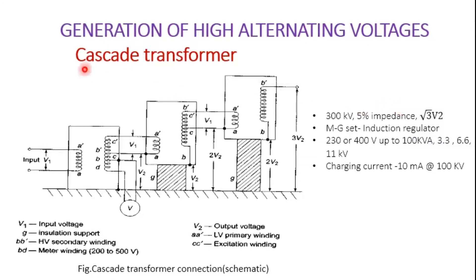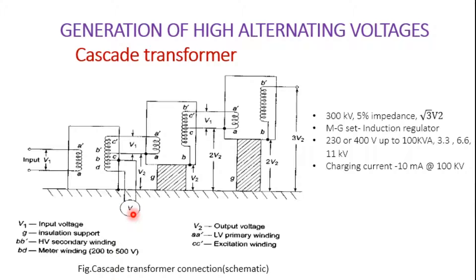Now we are going to discuss the first one, that is the cascade transformer. Here we see the circuit diagram of the cascade transformer. The input is generally fed by a motor generator set or sometimes an induction regulator. This is the input voltage V1, having the primary winding AA dash, then a secondary winding B dash, and another winding BD for measurement of the voltage across the secondary side. V1 is input, G is the insulation support, B dash is the voltage winding, and BD is for meter reading.